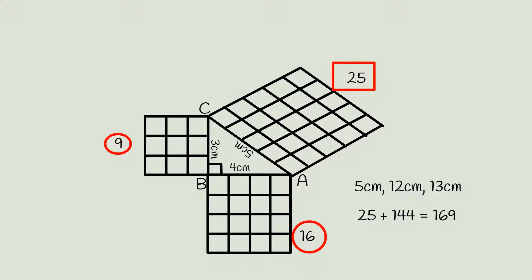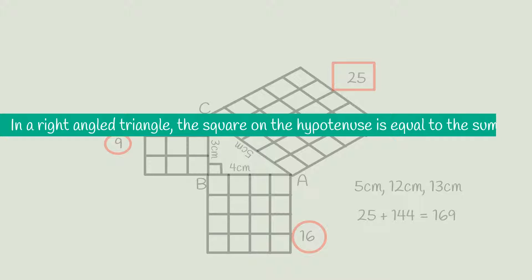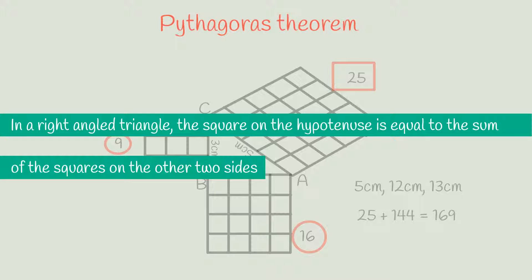From this observation, we can infer: in a right angled triangle, the square on the hypotenuse is equal to the sum of the squares on the other two sides. This statement, which gives the relationship between the areas of the sides of a right angled triangle, is called the Pythagoras theorem.